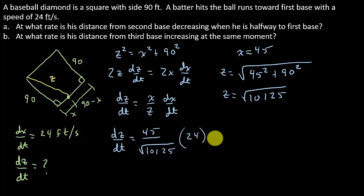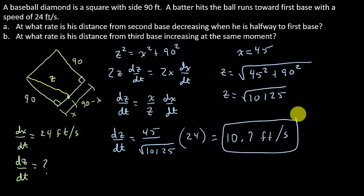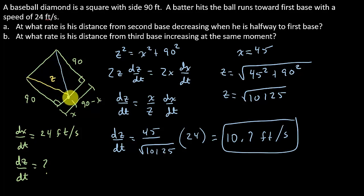That gives us 10.7 feet per second. It's the same magnitude — in part A we got negative 10.7, and here we get positive 10.7. When we were finding the distance from second base as he traveled toward first, that distance was decreasing, so we got the negative. Here, as he's moving away from third base, the distance is increasing, so we get the positive. Hope the video helped — go check out my other videos, give me a like, share, and subscribe. Thanks for watching.